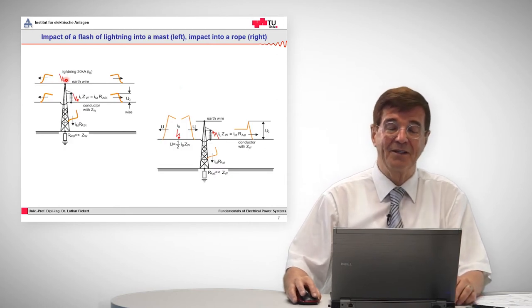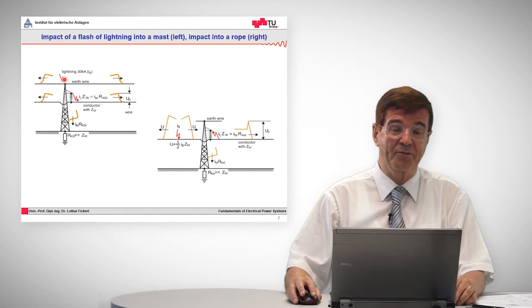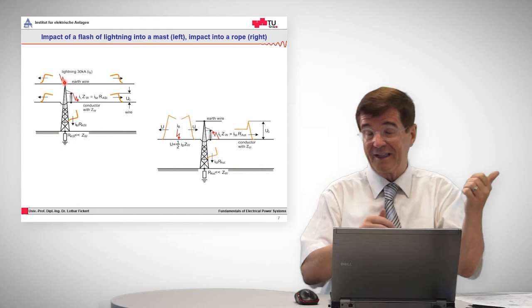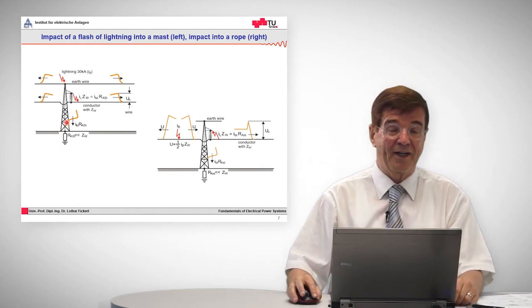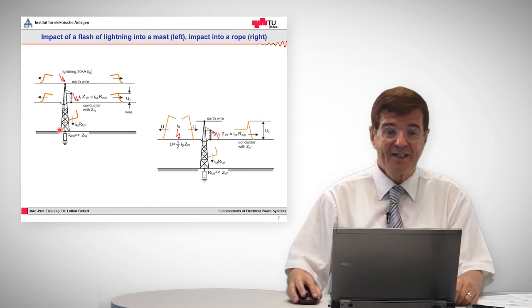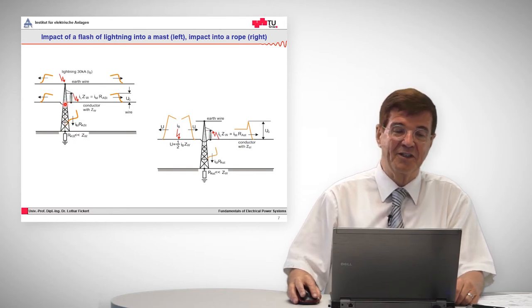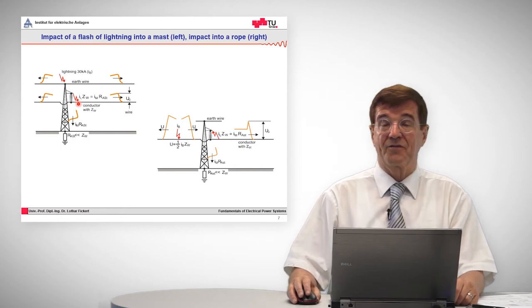For example, if there's a flash of lightning of 30 kilo amps that goes straight into the tip of such an overhead pole, the current is divided into three parts: one goes to one side, one to the other side, and the third goes down through the pylon. If this pylon has a bad or high grounding resistance, we have a built-up of voltage which is called a reverse voltage, and that may cause a spark over from this now energized steel pylon into the life wire. That is called the reverse flash over.